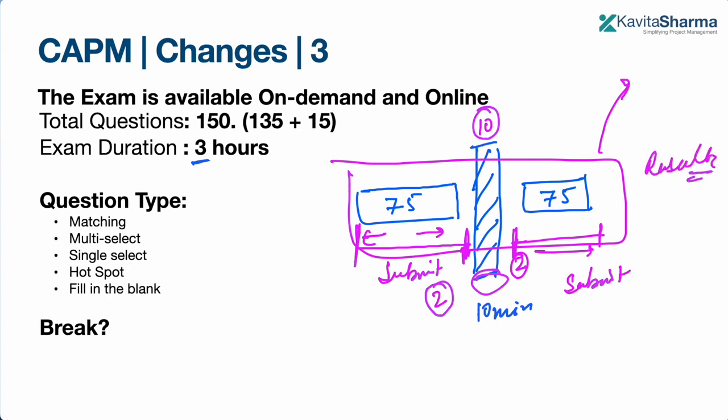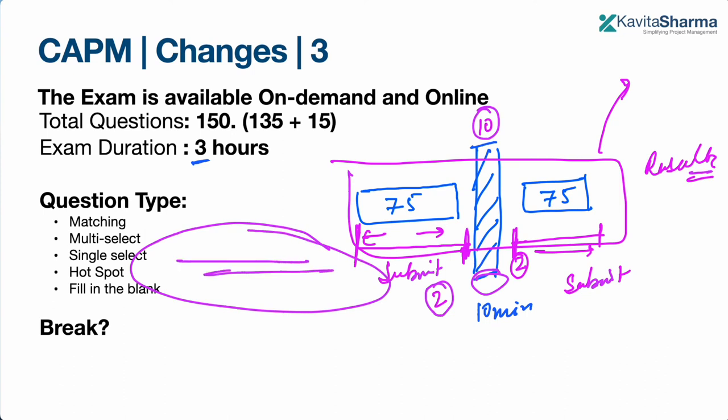You get a pass or fail result immediately. This is an on-demand exam, so you will receive a different set of questions drawn from a large pool of thousands of questions, and a different person will get different questions.